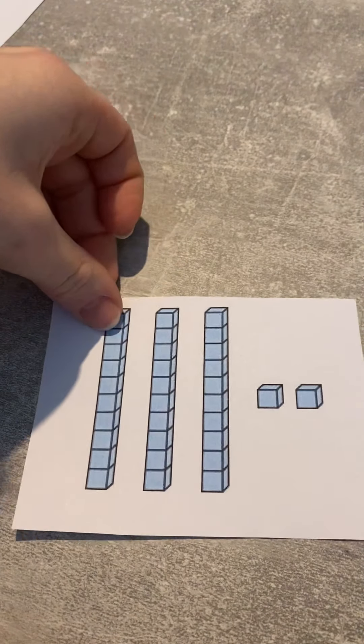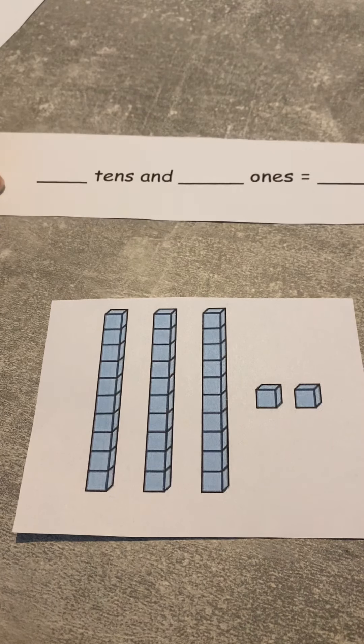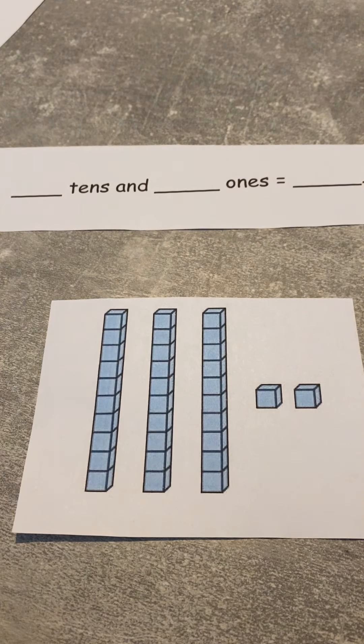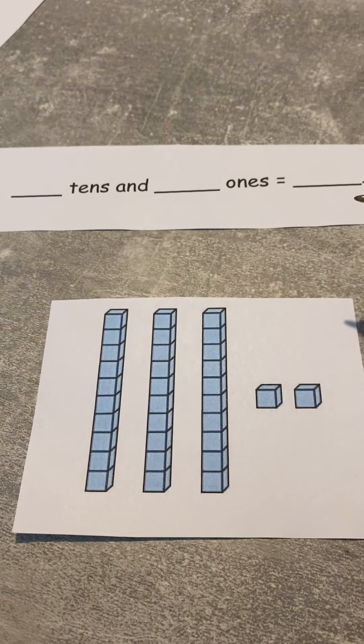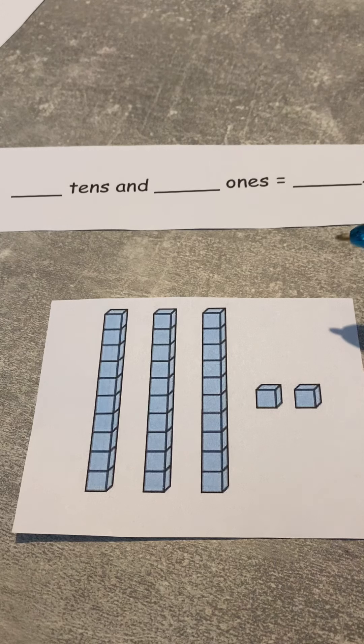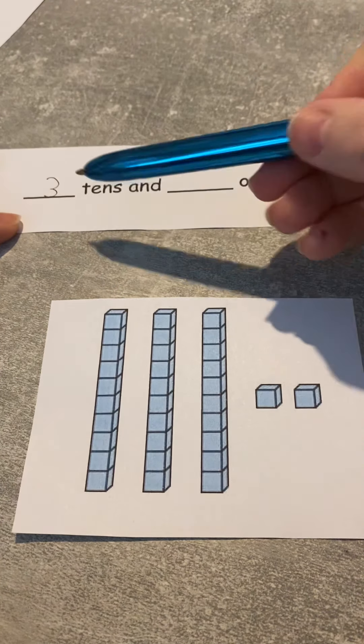There you go. So how many tens have I got? How many tens? Remember which one the ten is? This is the ten. How many tens have I got? Three, well done! So I'm going to put three there. Three tens, one, two, three. Well done!